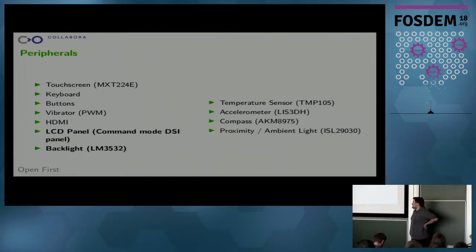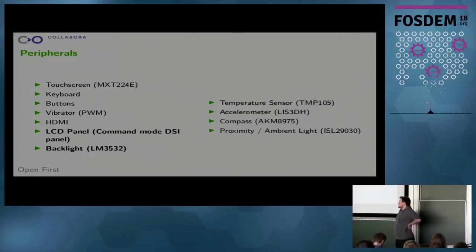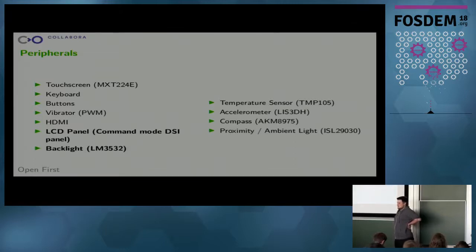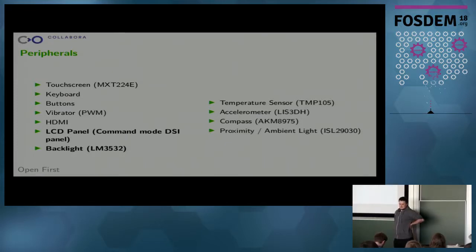Additionally, there are quite a lot of peripherals attached to a phone, obviously. The nice thing is that nowadays on the mainline kernel almost all of those already had drivers, because somebody required them for some other boards or chips. So we could just enable those in the device tree — the touchscreen, keyboard, and buttons. The vibrator needed a custom driver, which is just about 150 lines of code — it's connected to a PWM output. And the phone has HDMI output, which is working because it does not need any self-refreshing feature and is basically exactly the same as on the Pandaboard, which is well supported by the mainline kernel.